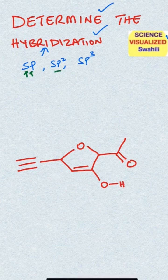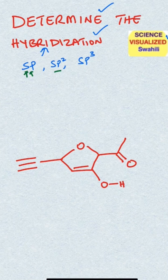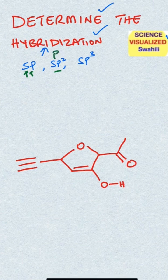sp2 has one s and two p orbitals. Remember we have three p orbitals: px, py, and pz. So that means there is one p that's not used in sp2.